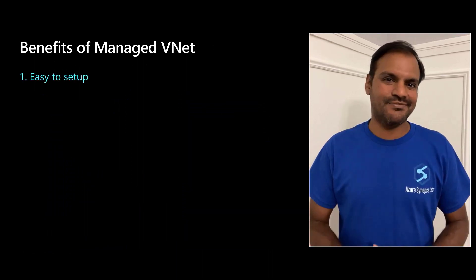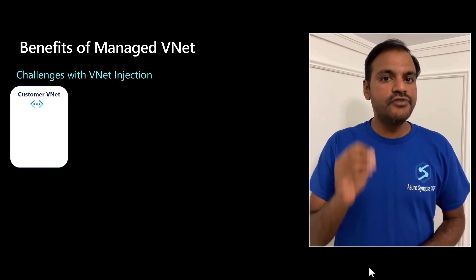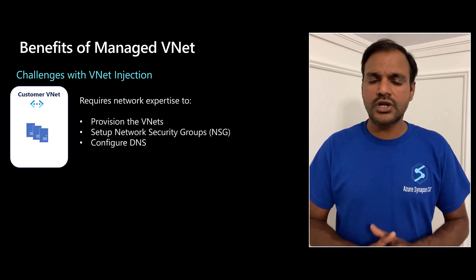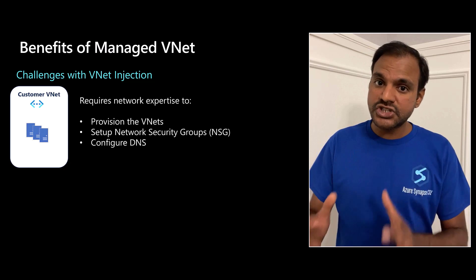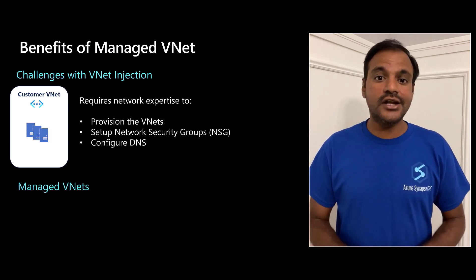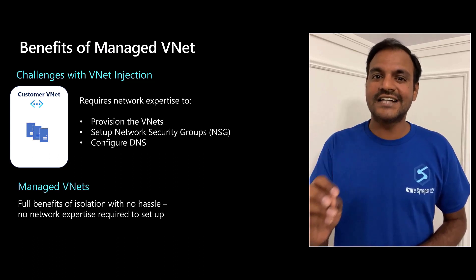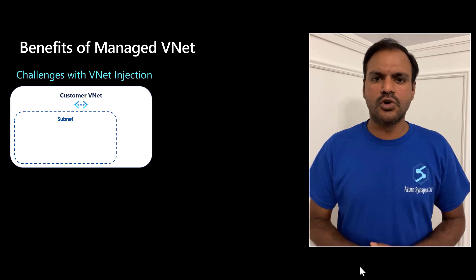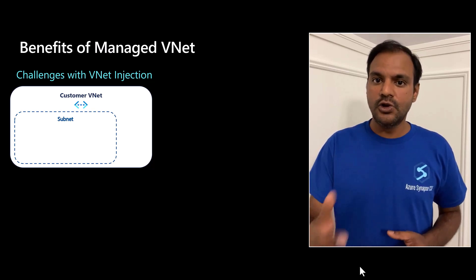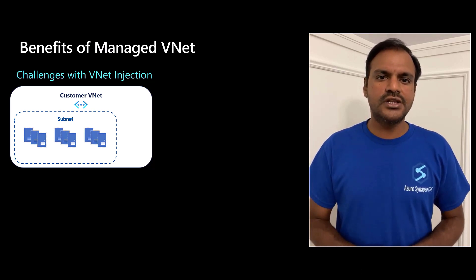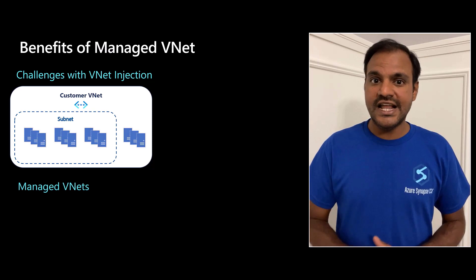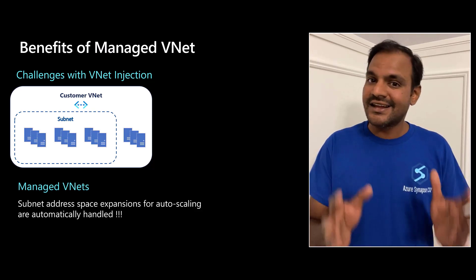What are the main benefits of managed VNets? Number one, it's easy to set up. Network isolation is typically achieved by VNet injection where the compute resources are provisioned inside a customer-managed VNet. But that involves a lot of networking knowledge to provision the VNets and set up the network security groups. With managed VNets, you get all the benefits of network isolation without the hassle of VNet injection. Number two, auto-scaling. Spark and data integration workloads need auto-scaling based on demand and peak loads, which would require you to design your subnets with a large address space, or you might end up running out of address space. But with managed VNets, you don't need to create a subnet for your clusters — it's all automatically taken care of for you.